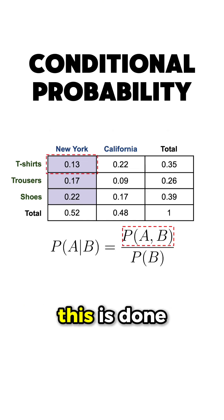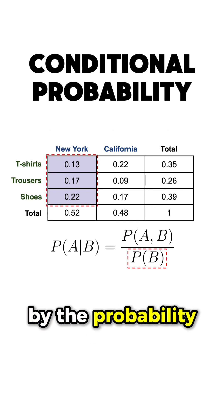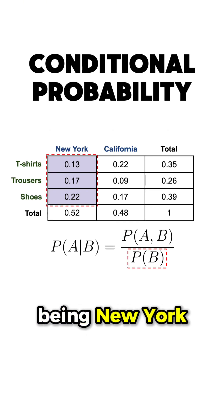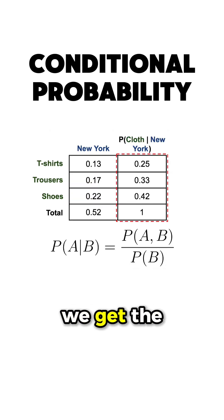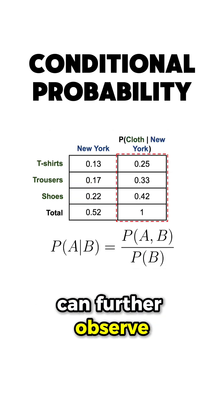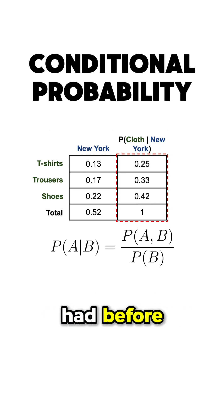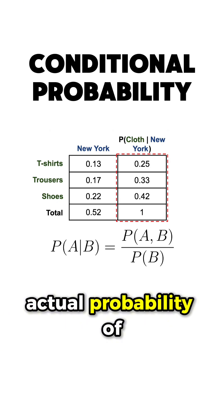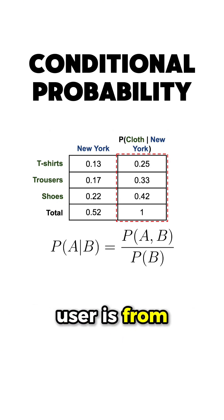Mathematically, this is done by dividing the corresponding joint probability by the probability of the location being New York. And if we do that for all the clothes, we get the following. We can further observe that the conditional probabilities are different from what we had before with the joint probabilities, and that the actual probability of selling a t-shirt knowing that our user is from New York has increased from 0.13 to 0.25.